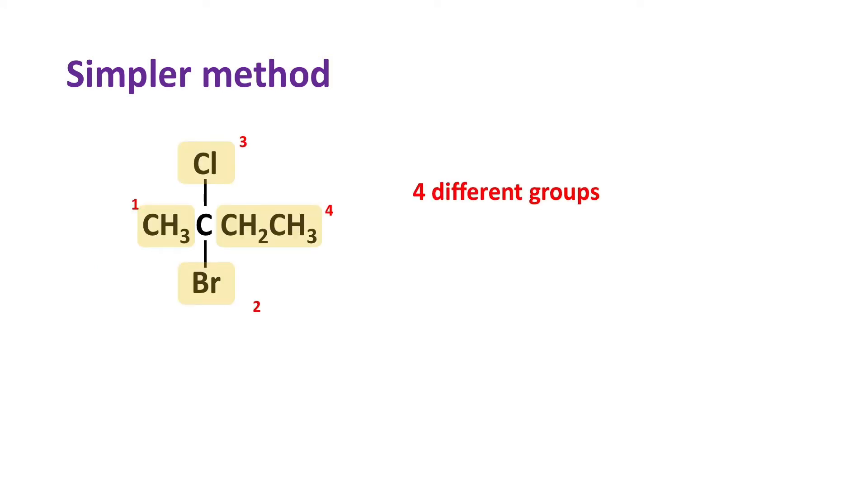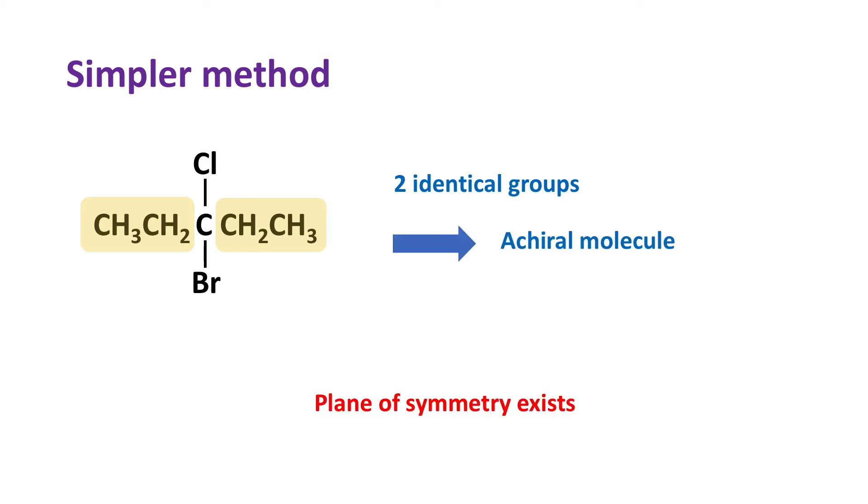Consider the following example. Here, we have four different groups. So this molecule is chiral because plane of symmetry doesn't exist. And this one, we have two identical groups. So the molecule is achiral because plane of symmetry exists.